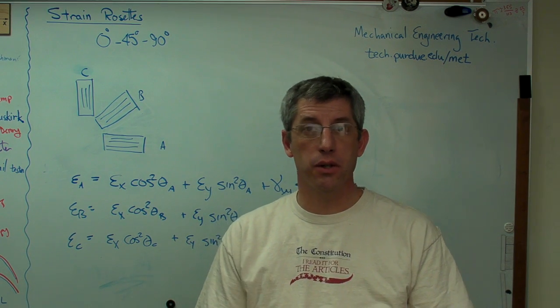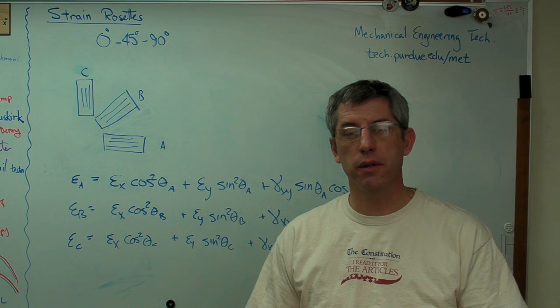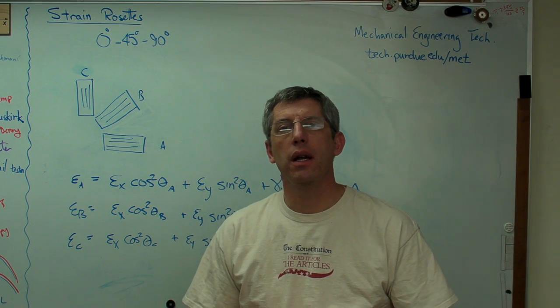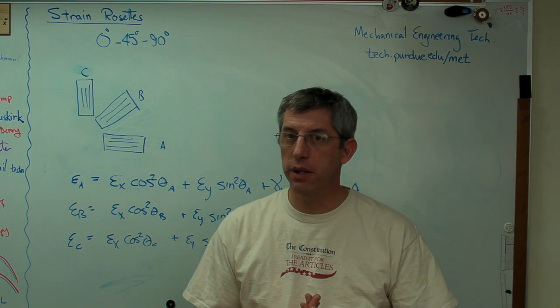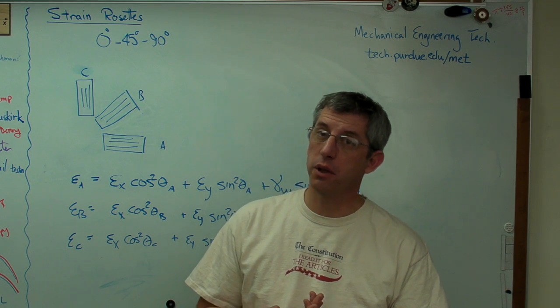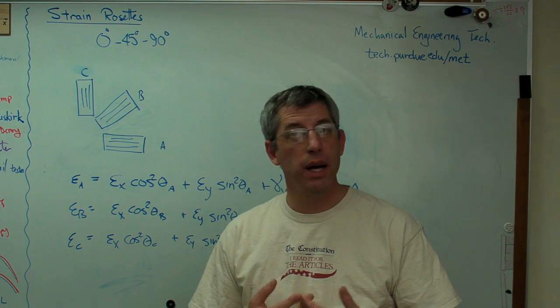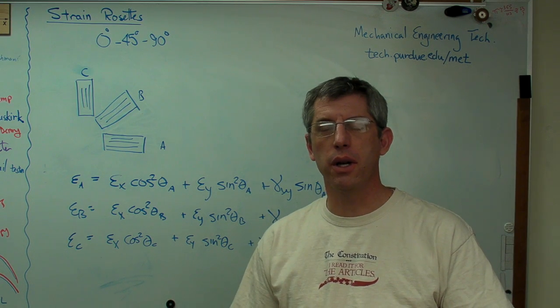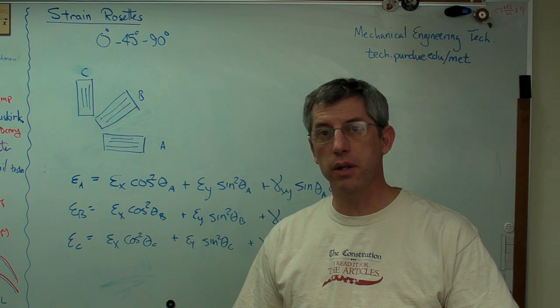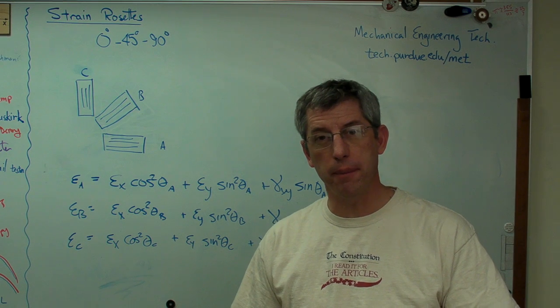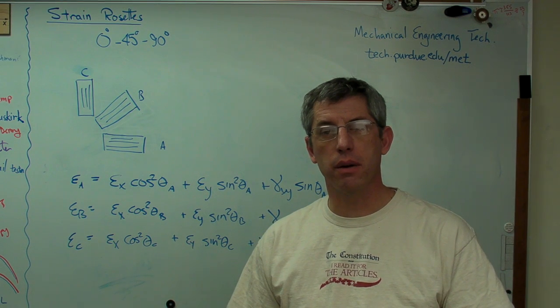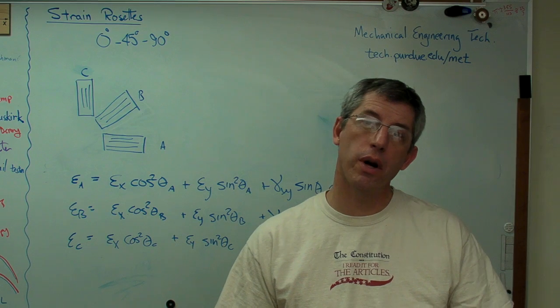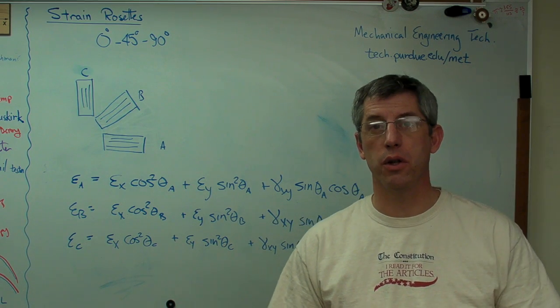Now a strain gauge is only good in one direction. There's a sensitive axis on the gauge. And I don't know about you, I live in three-dimensional space, so there's potentially three normal strains I want to know about. And even if I'm looking on the surface of a part, which is where strain gauges are good, there's going to be two normal strains and one shear strain between them. So let's talk about how to calculate those from strain gauge measurements using rosettes.